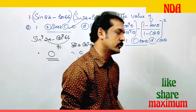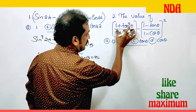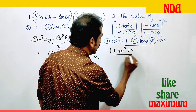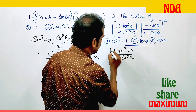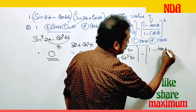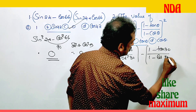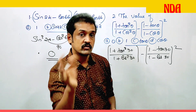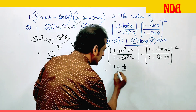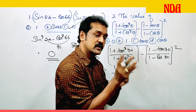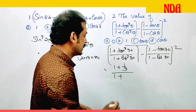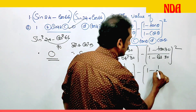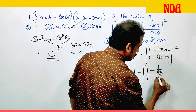Now let's set theta equals 30. This becomes: (1 plus tan squared 30) by (1 plus cot squared 30), minus (1 minus tan 30) by (1 minus cot 30), the whole squared. Tan squared 30 means (1 by root 3) squared equals 1 by 3. So we get (1 plus 1/3) by (1 plus 3), minus (1 minus 1 by root 3) by (1 minus root 3), the whole squared.